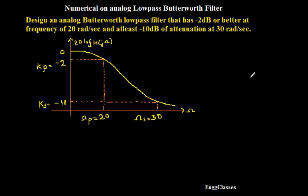So with this, how shall we proceed further? There are four steps to solve this numerical. We will consider those four steps and solve this numerical very easily. I recommend you to watch the video of steps involved in the design of analog low-pass filter, so that once we know that, we can solve any numerical on that. This is just one of the numericals to get acquainted with the low-pass Butterworth filter.